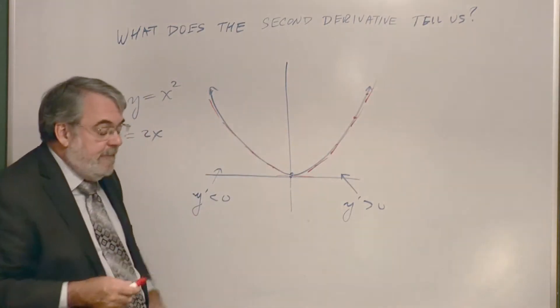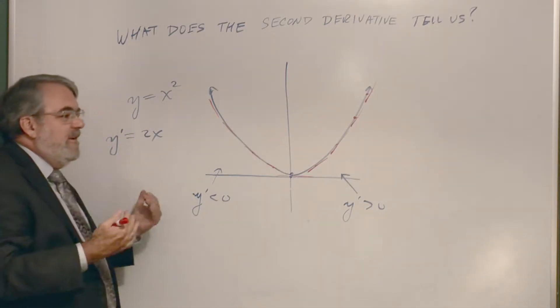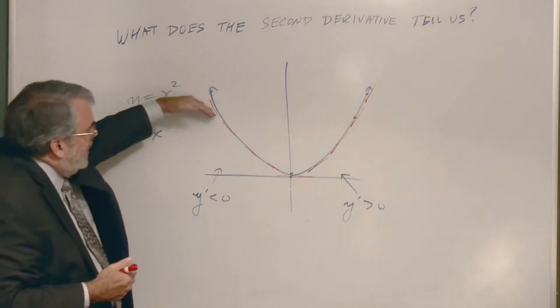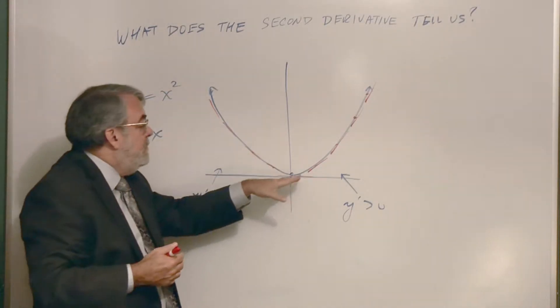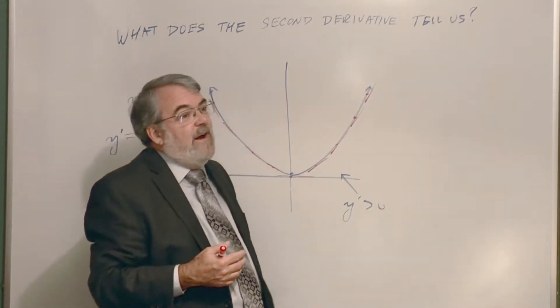So what's going on there? Well, you think about this, think of the derivative as the slope of the tangent line. Then the slopes are getting smaller and smaller and smaller. Eventually they reach 0, and then they start increasing, going faster faster and faster.